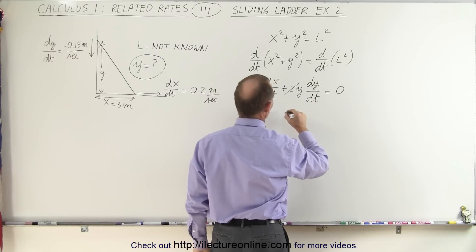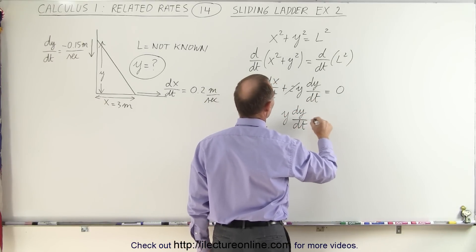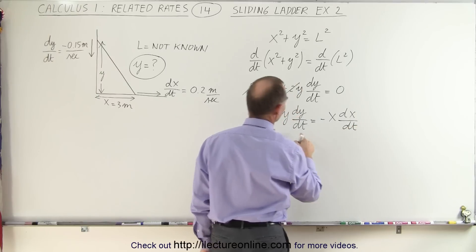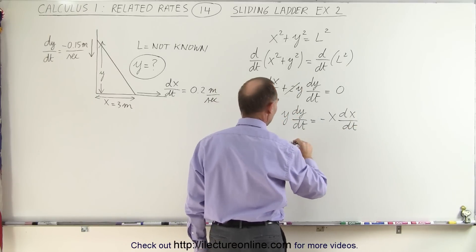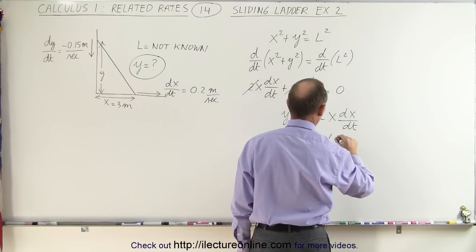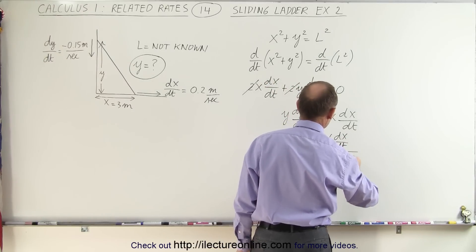So we bring this to the other side. We have y dy/dt equals negative x dx/dt. And then if we divide that by dy/dt, we can get y equals minus x times the ratio of dx/dt divided by dy/dt.